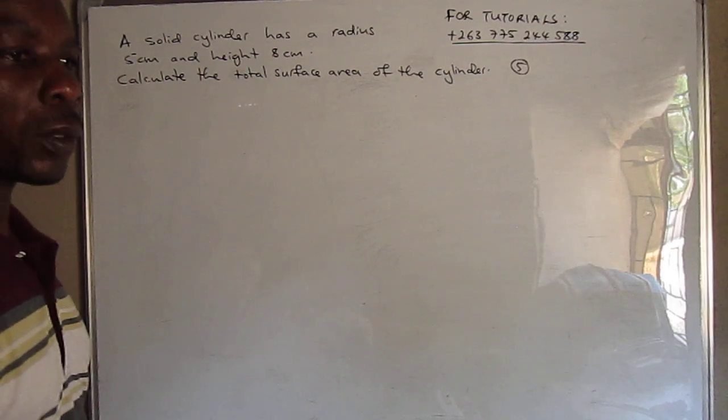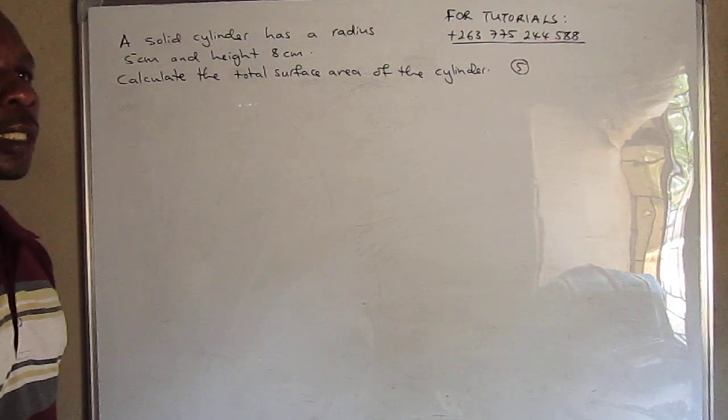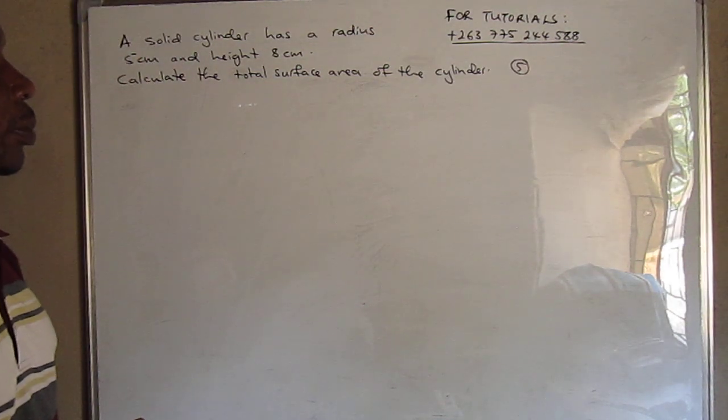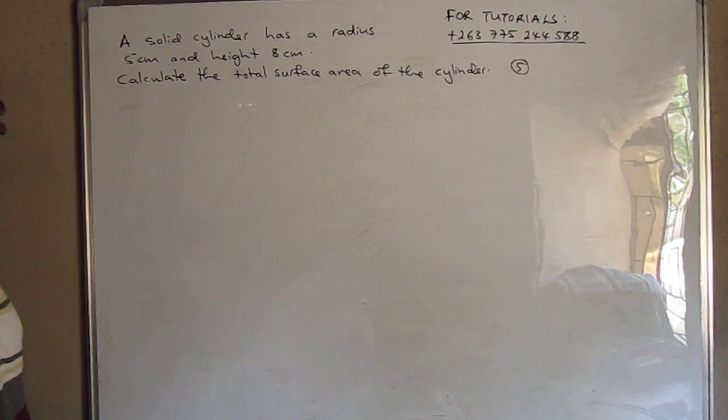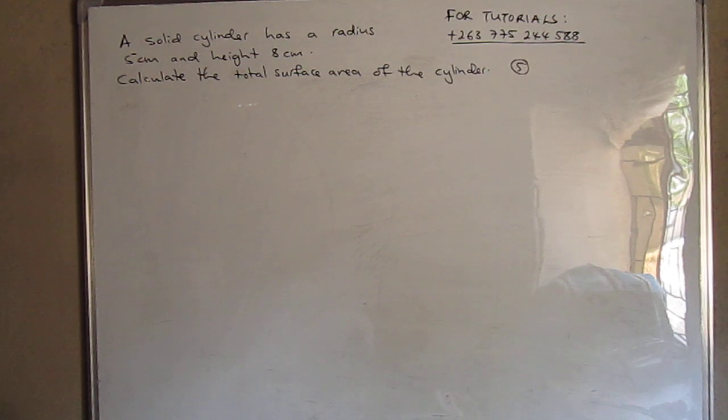Welcome once again to our online mathematics tutorials. Today we have a question on mensuration of solid shapes. The question reads: a solid cylinder has a radius of 5 cm and height of 8 cm. Calculate the total surface area of the cylinder.